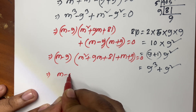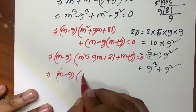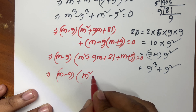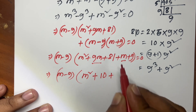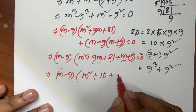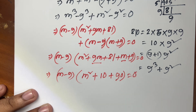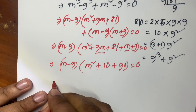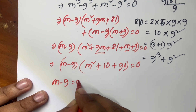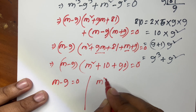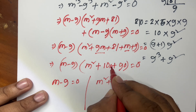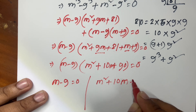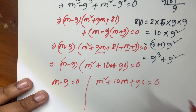So m minus 9, times m squared plus 9m plus 10m plus 81 plus 9, equals 0. That simplifies to: m minus 9 equals 0, and m squared plus 10m plus 90 equals 0.